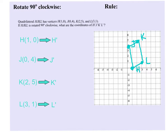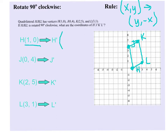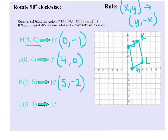We're going to use the rule from the previous page — the pre-image (x, y) becomes the point (y, -x). If we look at our first point, H at (1, 0), the y value of 0 is now going to be first, and the x value of 1 is now going to be -1. For point J, the new image will be (4, 0) — the y value goes first and the x value goes second. Zero can't be made negative, so it stays zero. For the image of K, it's going to be (5, -2), and for the image of L, it's going to be (1, -3).